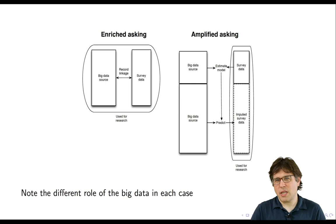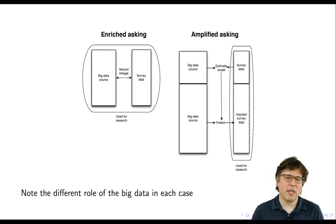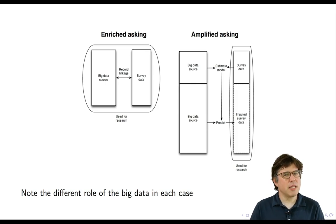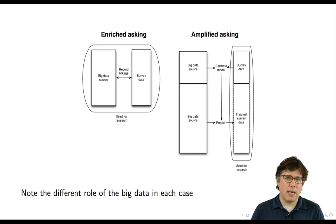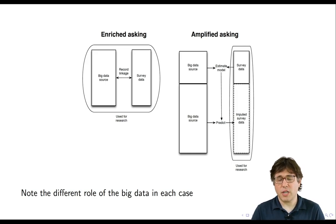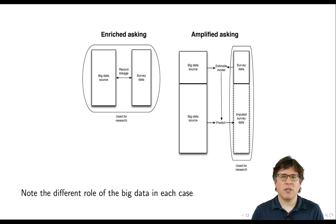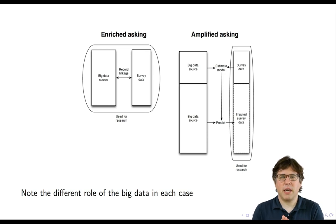So how are these two things like peanut butter and jelly? I think there are two kind of templates that we can imagine using when we're linking together surveys and big data sources. The first I call enriched asking, and the second I call amplified asking. There's a difference in these two approaches in the role of the big data and how the big data and the survey data are connected together.